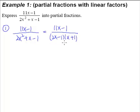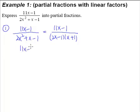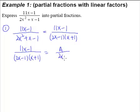Based on what we learned earlier in the introduction, this single fraction's denominator is a product of two linear factors. Therefore, we know that the partial fractions should have the form: A over (2x minus 1) plus B over (x plus 1). So this is the second step — we split up based on the denominator into a sum of two simpler fractions.